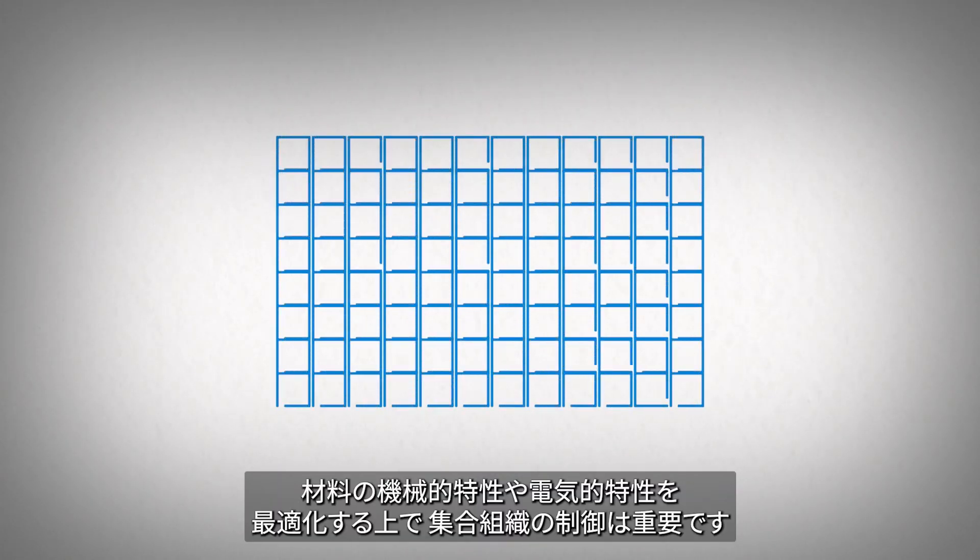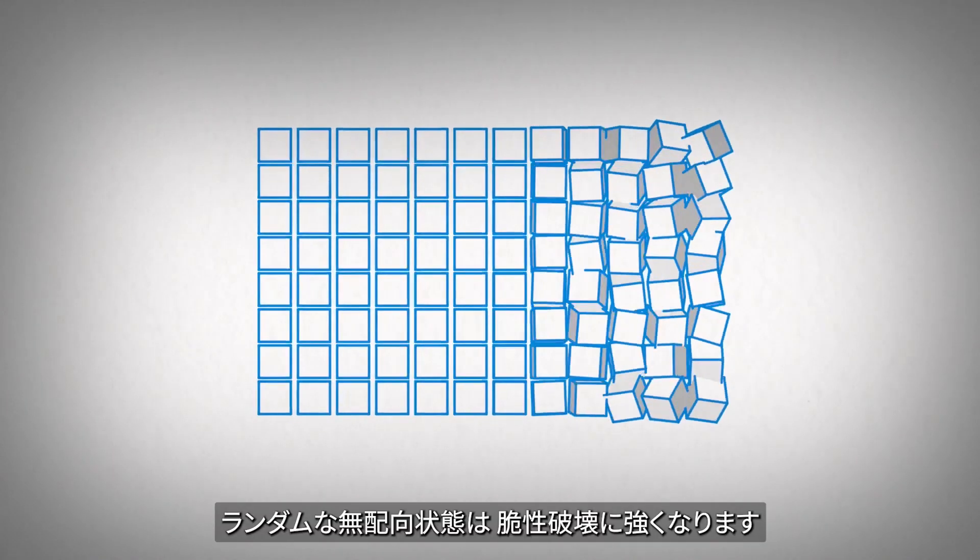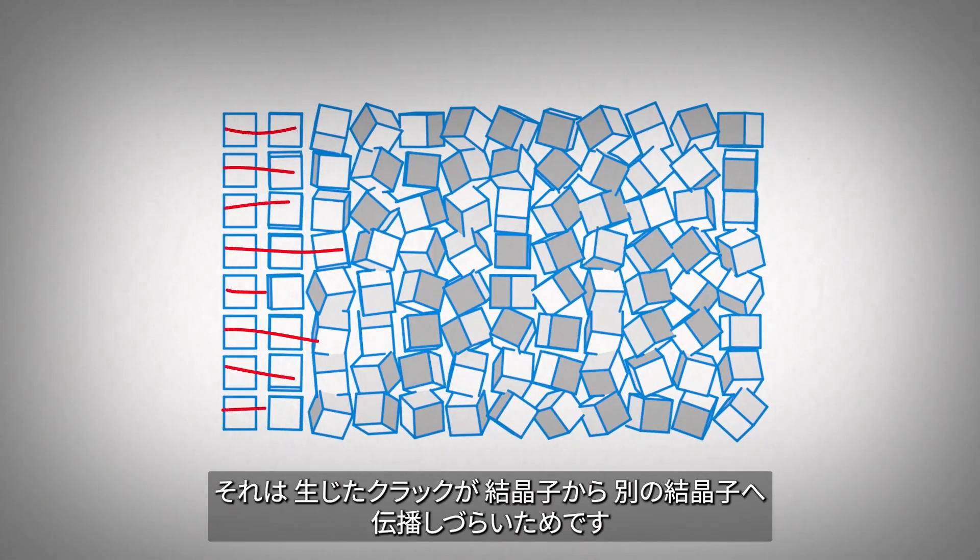Texture is important in optimizing both mechanical and electrical properties of materials. A random texture tends to resist brittle failure, as it is difficult for cracks to transfer from one crystallite to the next.